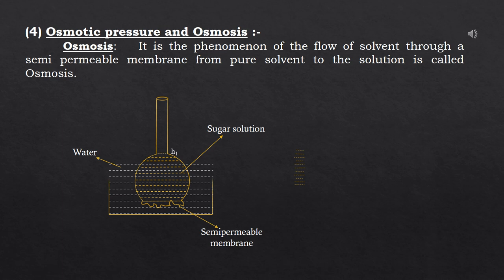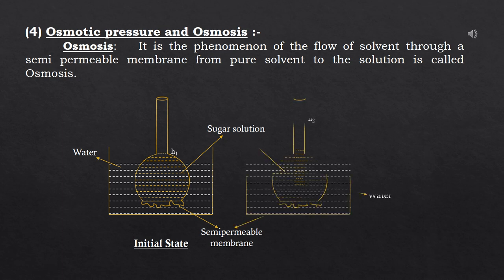The membrane allows only solvent molecules to pass through it, not the solute particles. As a result, there is movement of water molecules from the pure solvent into the solution. Water passes into the thistle funnel and the level in the funnel rises gradually. This process is called osmosis.